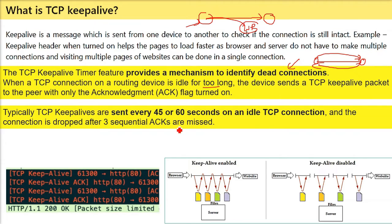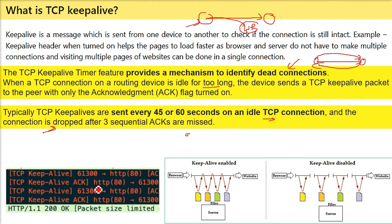There are six flags in the TCP header, and only the ACK flag is turned on in these packets. Typically, TCP Keep Alive packets are sent every 45 to 60 seconds when the TCP connection is idle — meaning you are not sending or receiving anything. The connection is dropped after three sequential ACKs are missed. If three sequential ACKs are missed, the connection will be dropped.